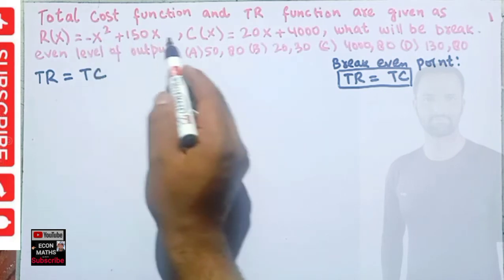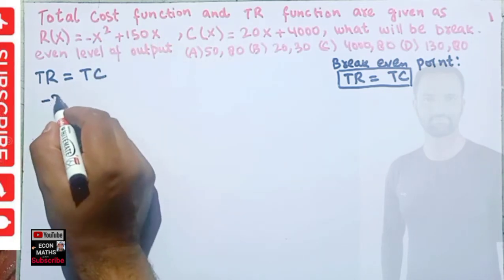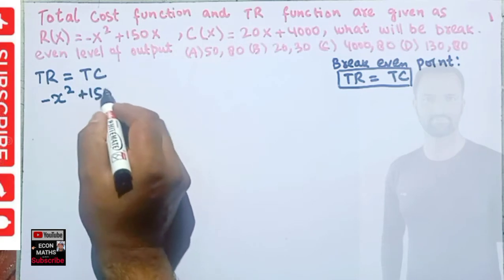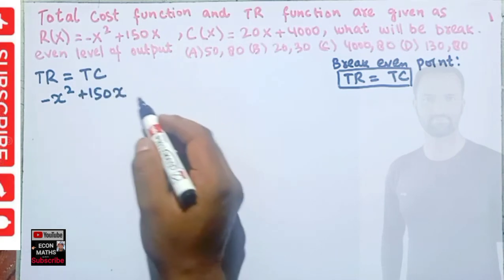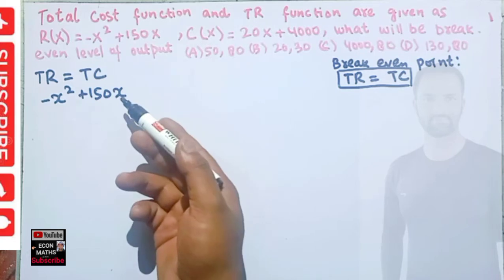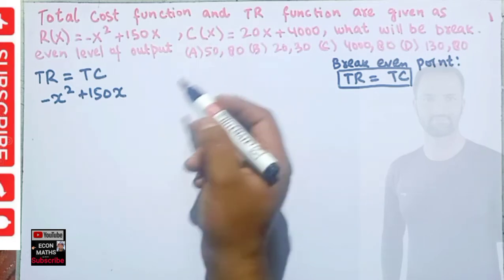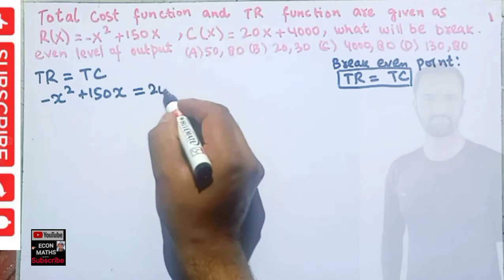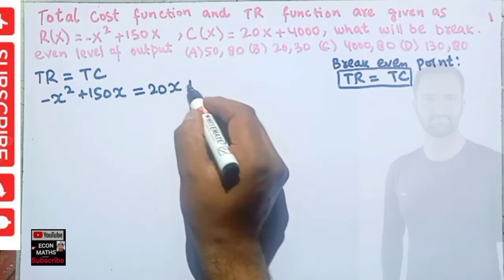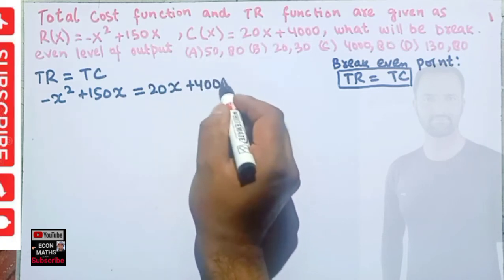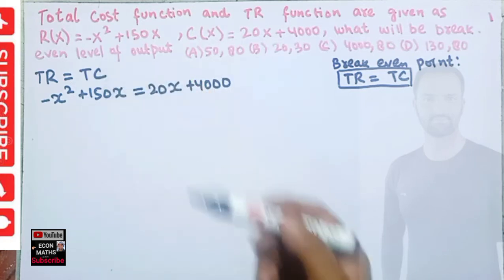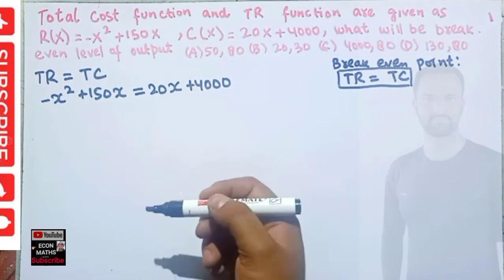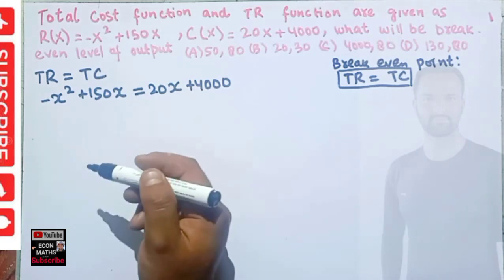For break-even, our total revenue should be equal to total cost. So we write: minus x squared plus 150x equals 20x plus 4000. We just need to equate the total revenue and total cost functions and solve.